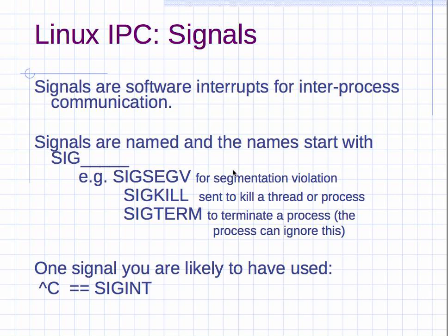This last part of the set of lectures on threads and signals is on signals, which is one way for processes or threads to communicate. When you see the term IPC, that's referring to inter-process communication. Signals are just one way for two processes or two threads to communicate with each other.